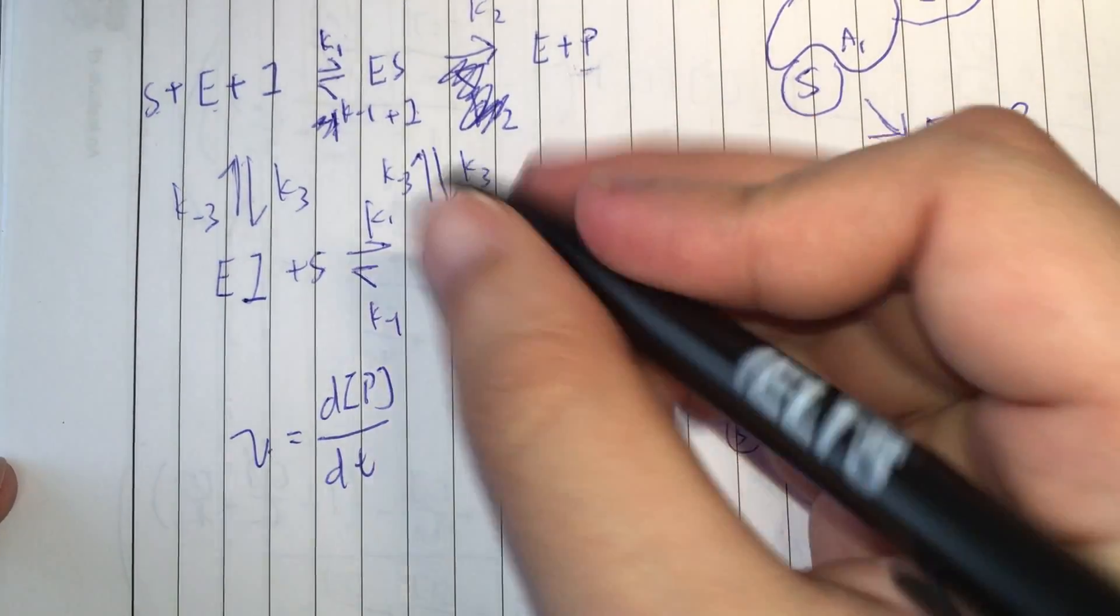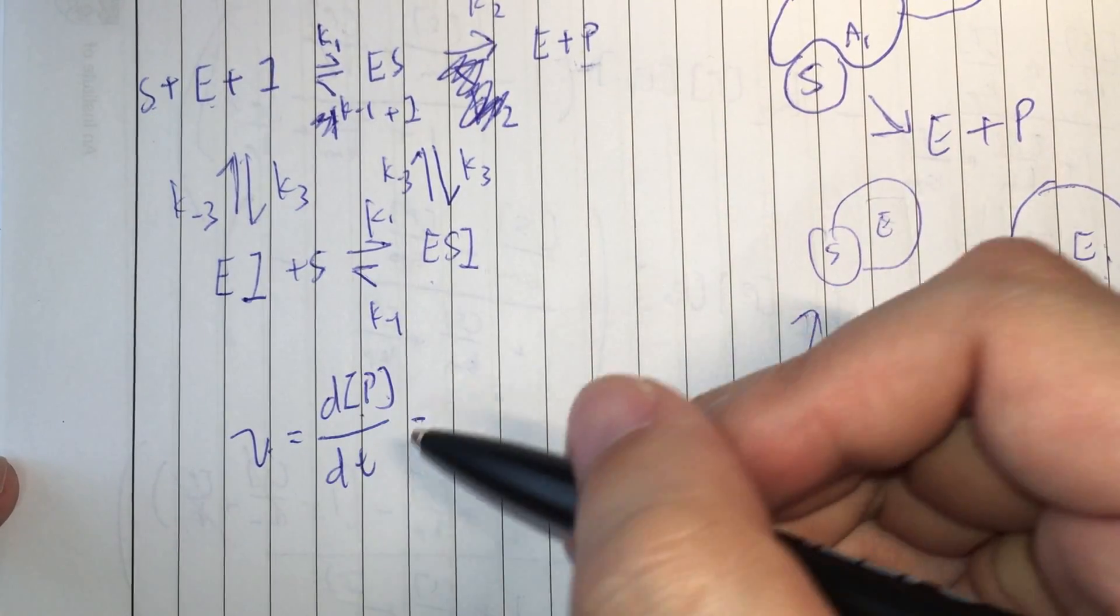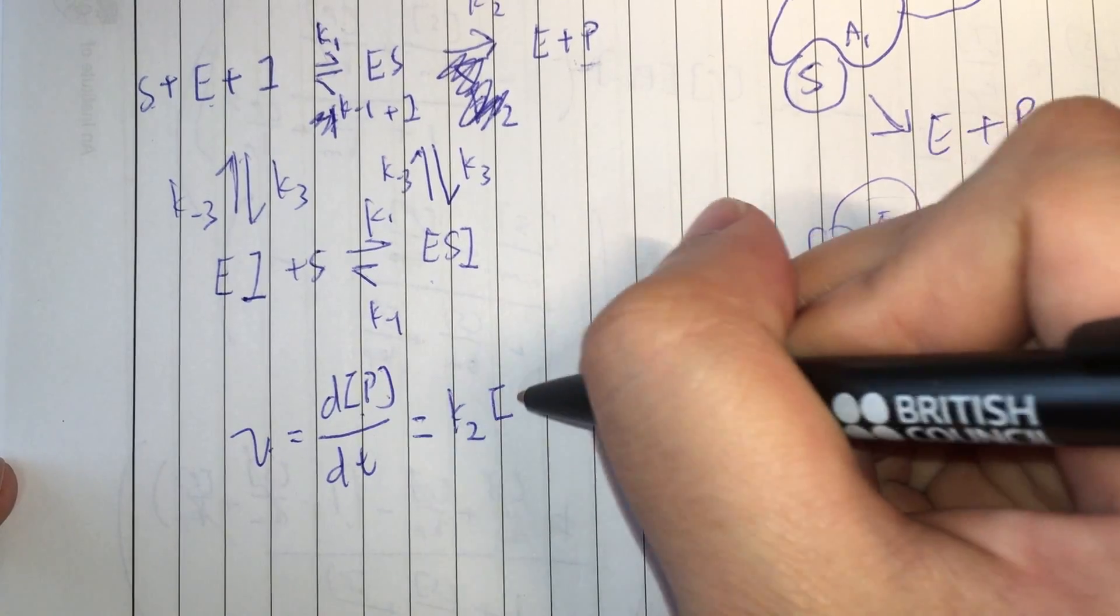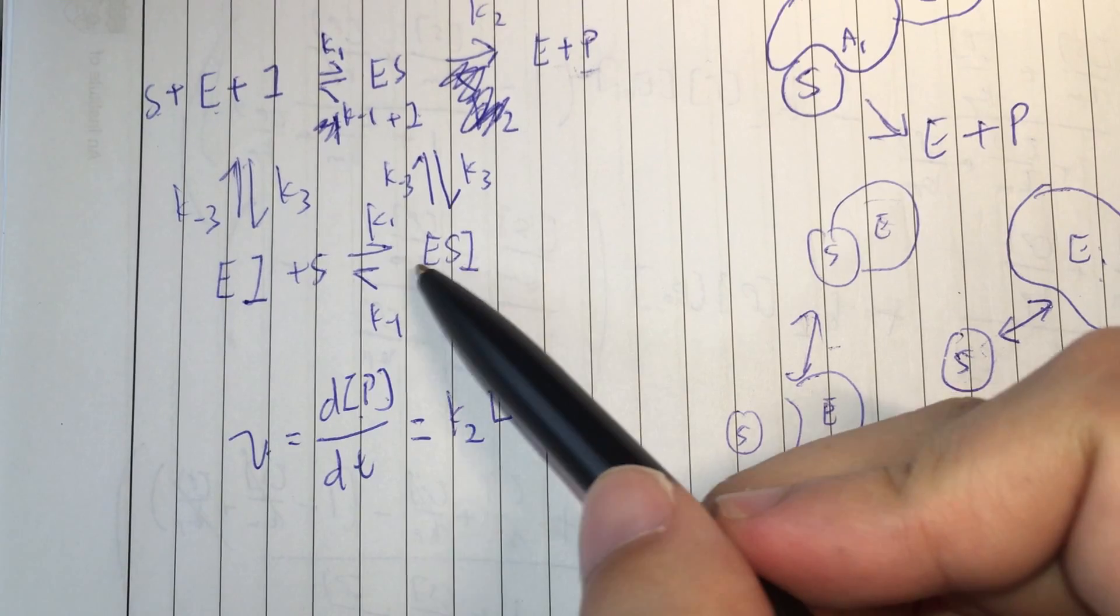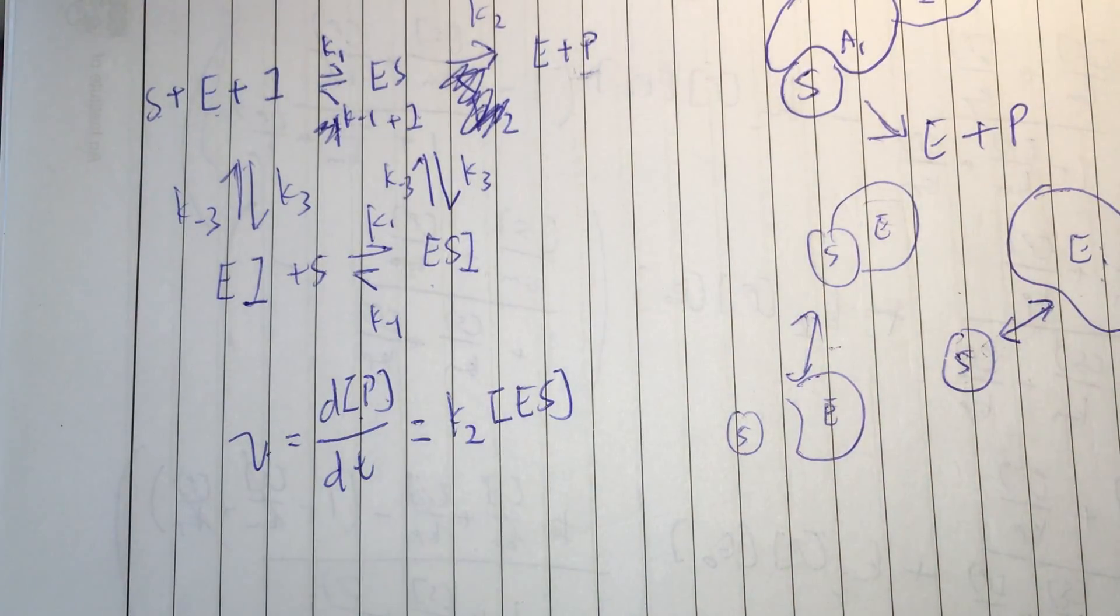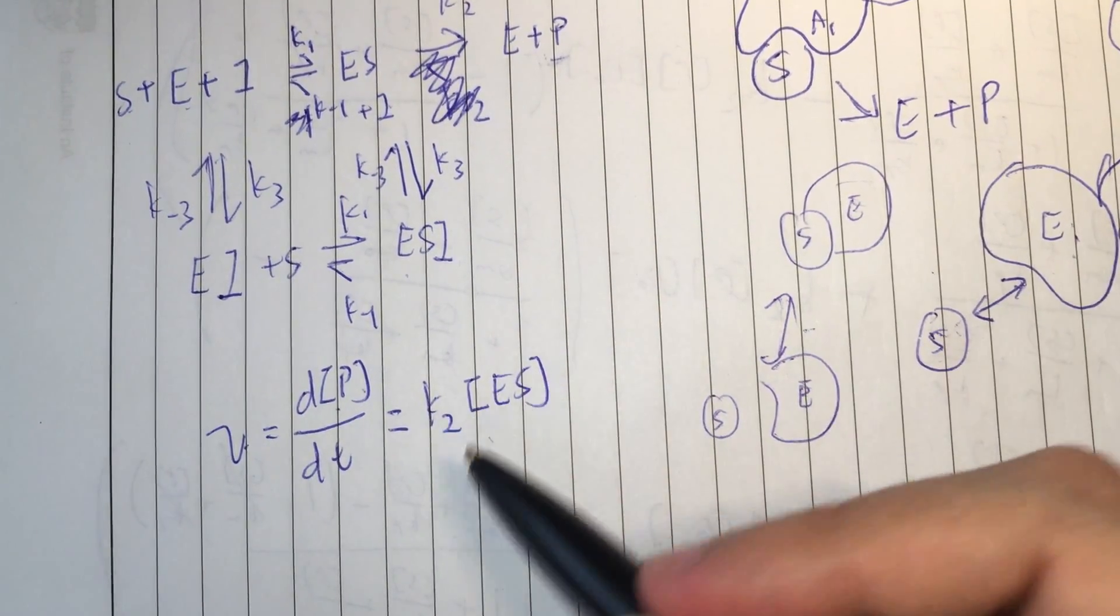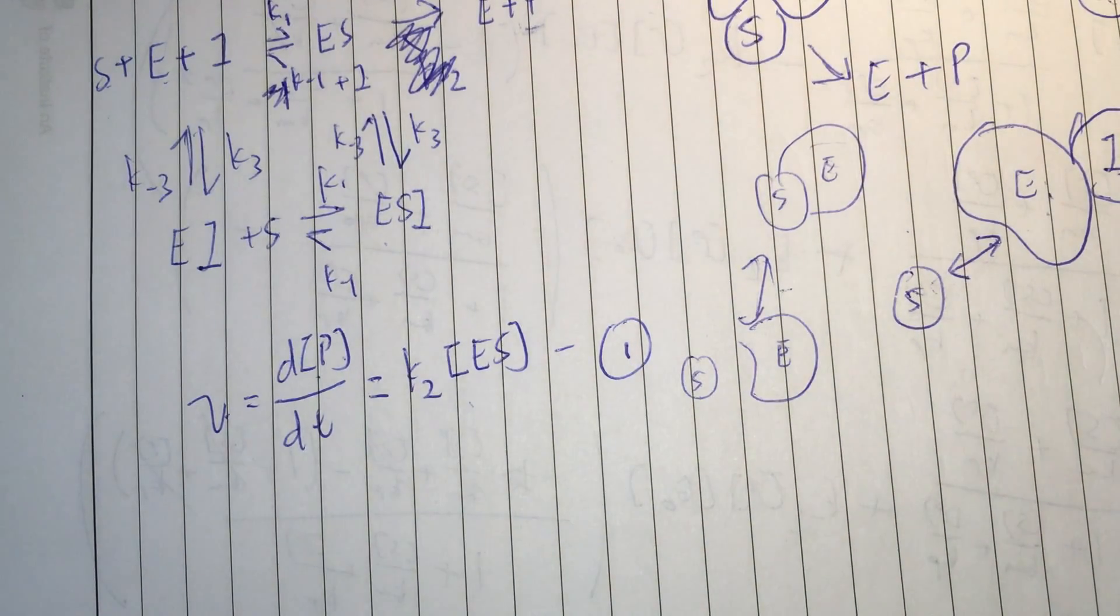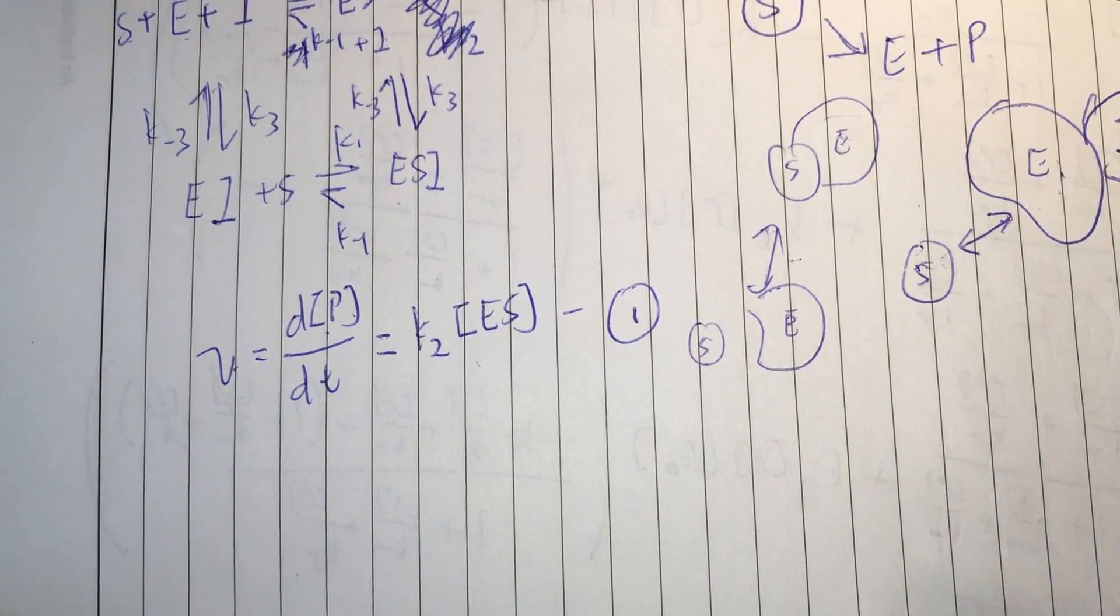V equals to dp/dt, the concentration of product with respect to time. And that is equals to K2 into ES. So, the only thing this inhibitor does is to prevent this complex from turning into this. Nothing more than that. And so, the first equation is pretty much the same if you have seen the last videos before. Now we need to look at the second equations.